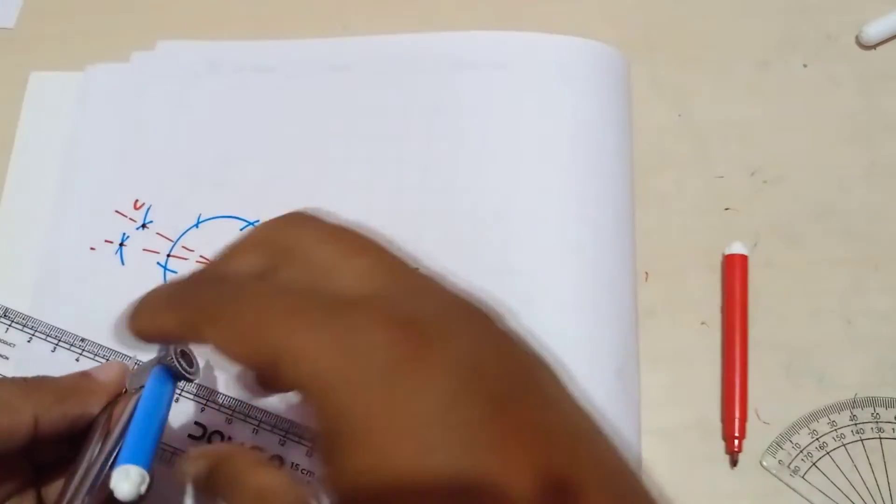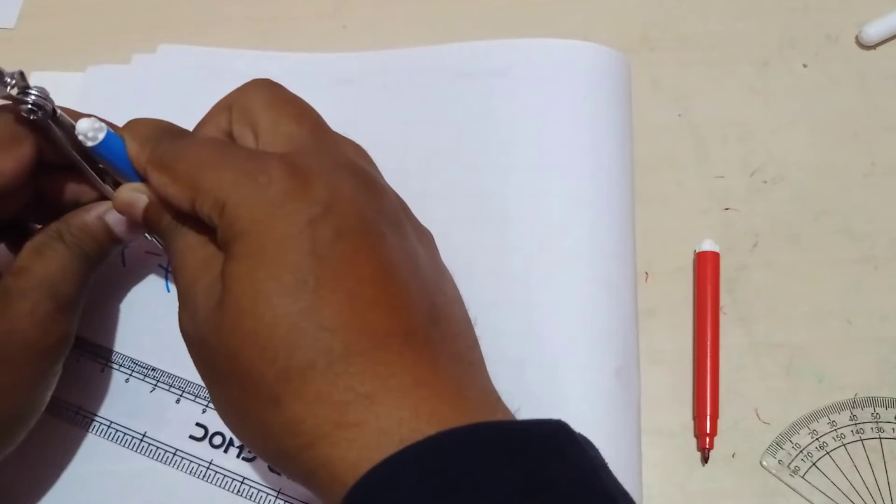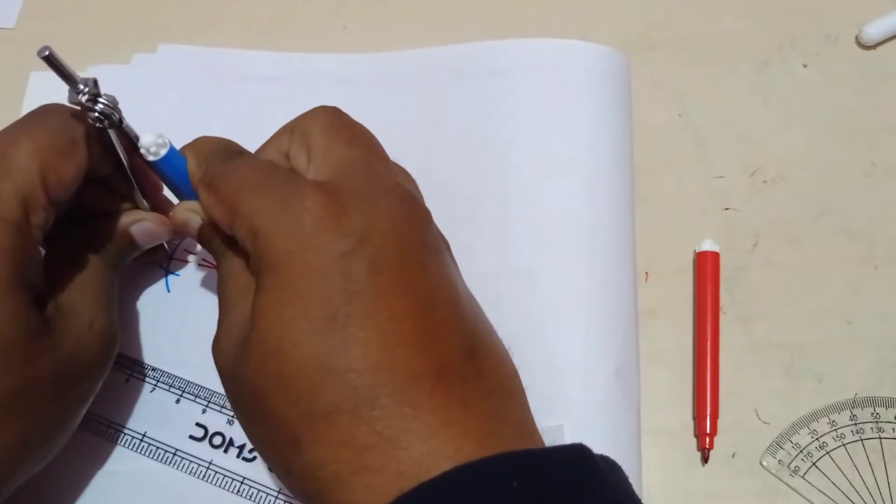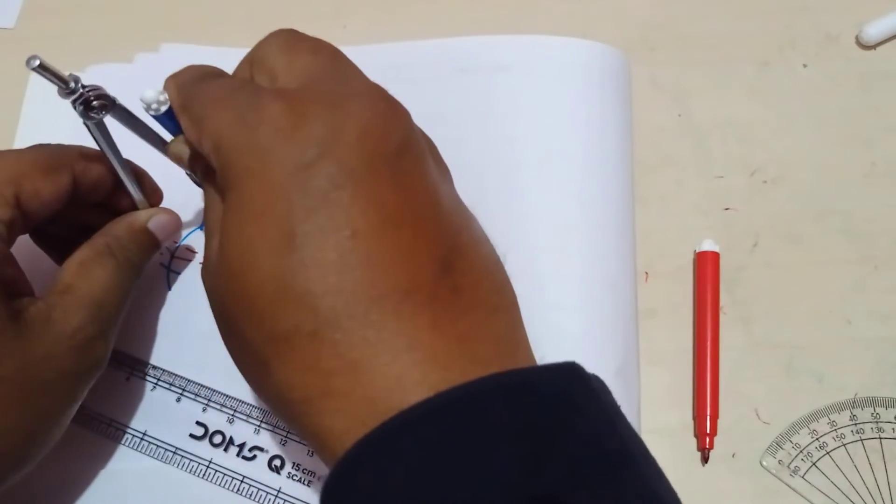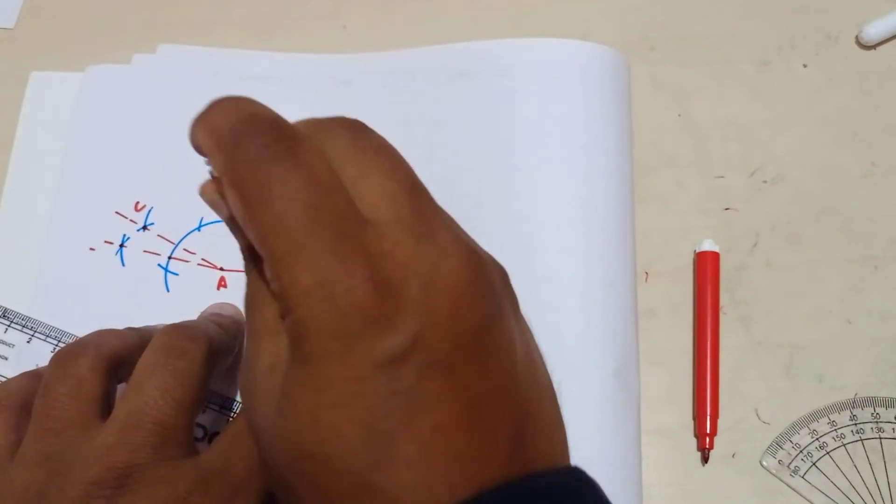From this point take a radius of more than half. Just take here from here. So we are going to bisect it. From this point.